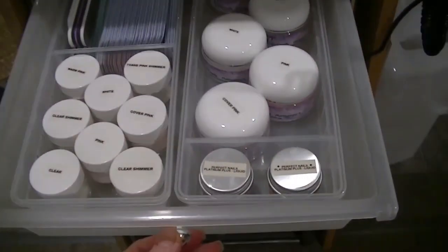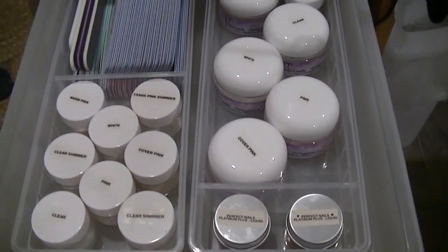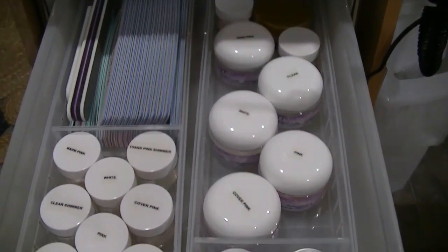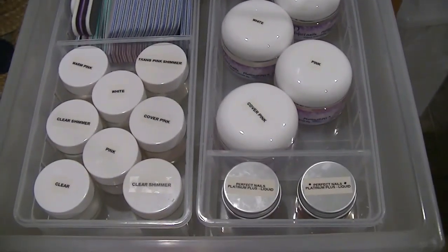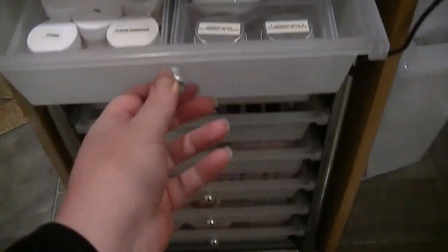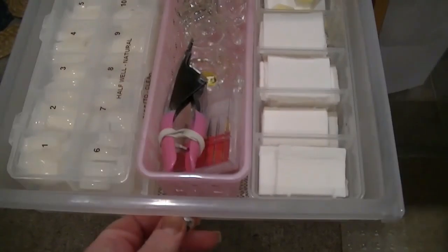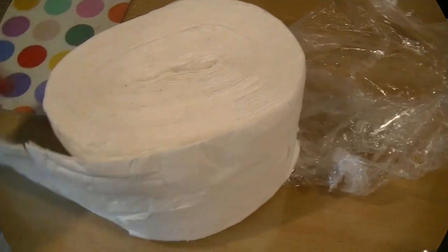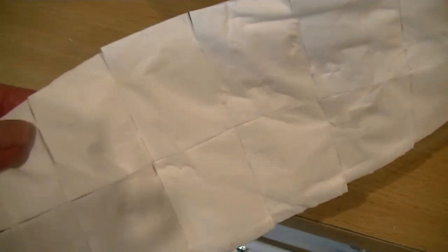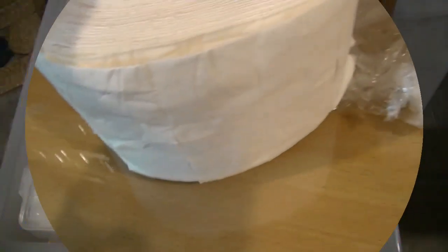In this drawer I keep my acrylic powders and liquids. I disperse my acrylic powders and liquid into smaller jars so that I don't have product contamination. In this drawer I have my tips, my tip cutters, and my lint-free wipes. There will be a link in my description box. These are great for removing the tacky layer from gel polish as there's absolutely no lint.